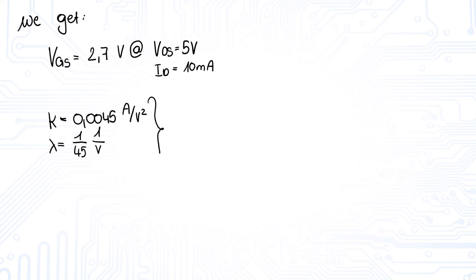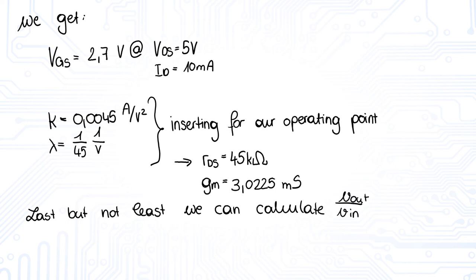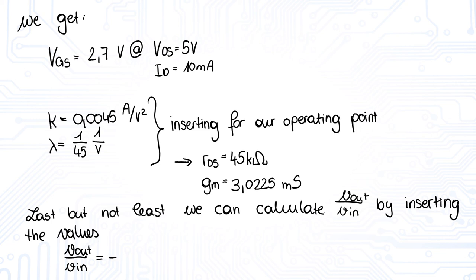And K is 0.0045 A per volt square and lambda is 1 over 45 1 over volts. With K and lambda we can now calculate RDS and GM. Be aware that we now have to insert the value of VGS for our operating point. We get RDS is 45 kOhms and GM is 3.0225 mS. Last but not least, we can calculate the value of the voltage amplification Vout to Vin. We use the formula from before and just insert all parameters. As mentioned before, you can just use a math tool to do so. Vout to Vin is minus 1.5185.